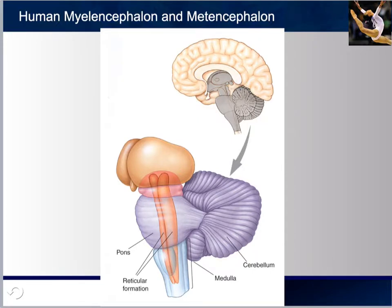Here we can see a picture of the reticular formation — these two straw-like pieces essential for arousal and various cardiac, circulatory, and respiratory reflexes. In theory, if we were to tear this up, we could die. This is why in movies you sometimes see a hero twist the neck of a guard, potentially killing the individual by interrupting the activity being sent through the reticular formation to our heart and lungs.